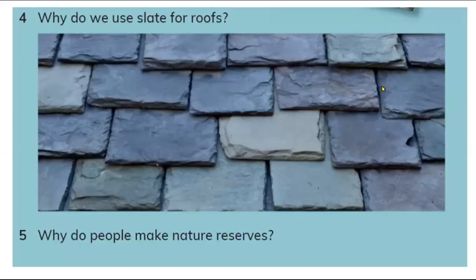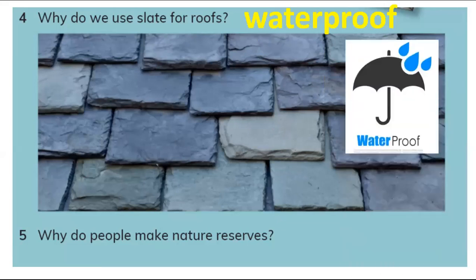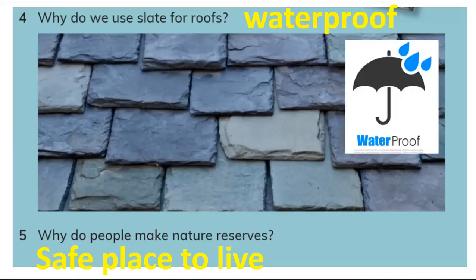Question four: why do we use slate for roofs? Because slate is waterproof — water cannot be absorbed into it and cannot go inside. Some rocks can absorb water, but slate is good for stopping water. Why do people make nature reserves? Because nature is a safe place to live. That is why people also use rocks from nature to build beautiful and safe houses.